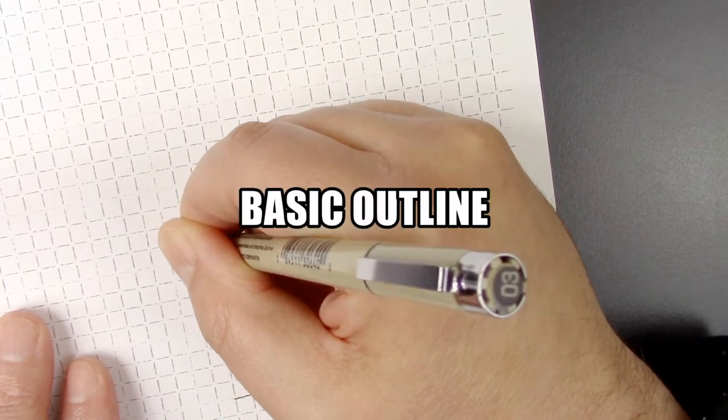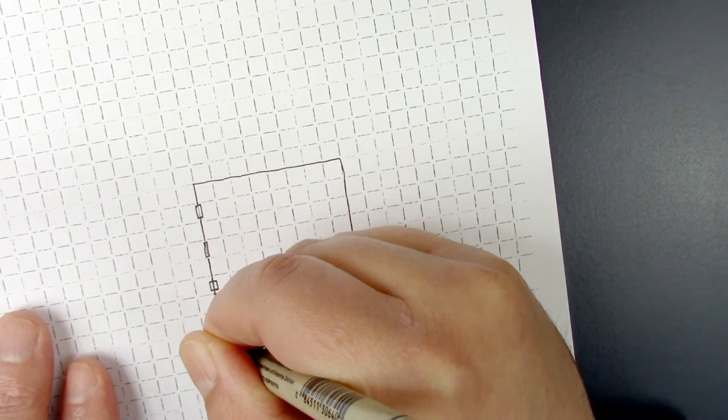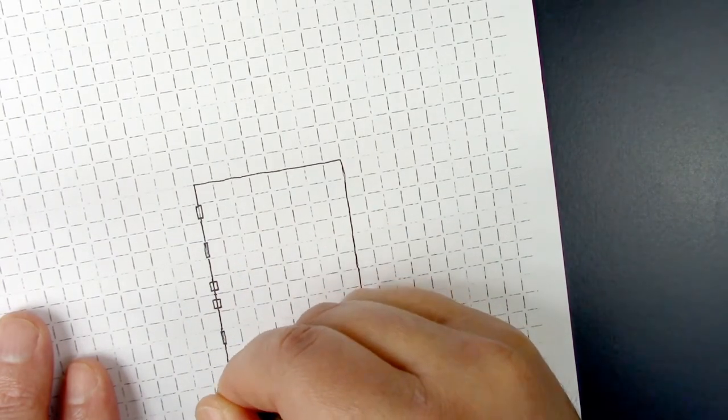We begin by doing a basic outline of the structure. It doesn't have to be anything too complex. All the doors and the windows we're going to clean up later in Photoshop anyway.